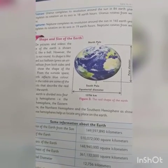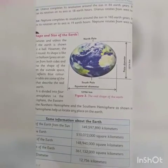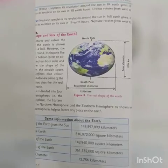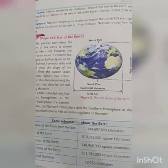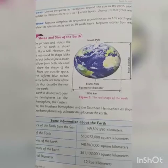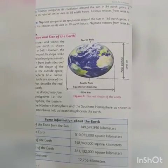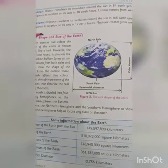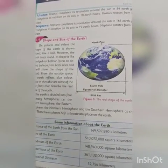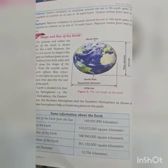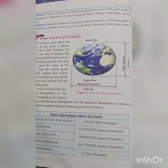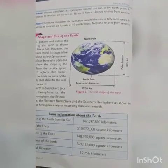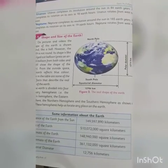Neptune completes its revolution around the sun in 165 years, and it completes its rotation in about 16 hours. Neptune rotates from west to east. Students, you all have written the revolution time period and the rotation time period — make sure to write it down and remember it. Allah Hafiz.